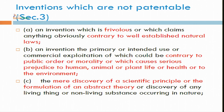Under Section 3, the first point is any invention which is frivolous in nature or contrary to well-established natural laws — there must be a realistic approach in patent. You cannot talk about frivolous things which are not realistic or are imaginary. The output or utility must be there, and it should not be contrary to well-established natural principles such as gravitational force, or action-reaction laws. If you make specifications relating to such things, the patent will not be granted.